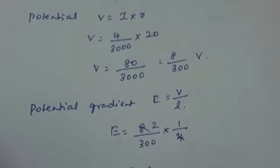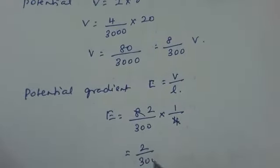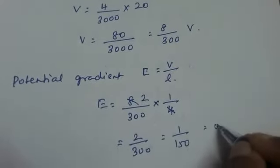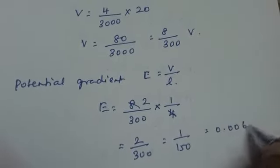Cancelling this, we get 2 by 300 which equals 1 by 150. If you divide this you will be getting 0.0066.